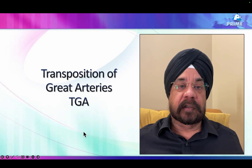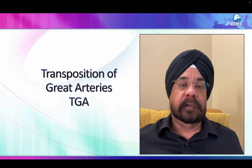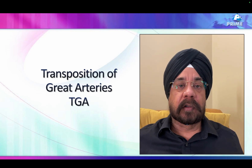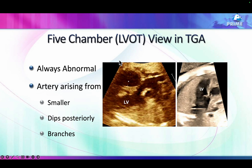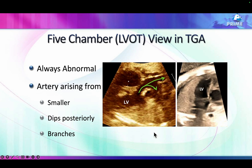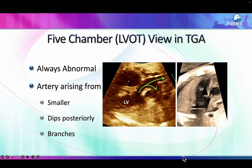Next in the area is transposition of great arteries — very easy to diagnose on a neonatal echo or an adult echo, but difficult in the fetus due to the issue of resolution. Once you see a four-chamber view, you may be lucky to see the artery coming from the LV, which is smaller, and you see it is branching into two. The artery coming from the left ventricle is branching, which means this is the pulmonary artery.